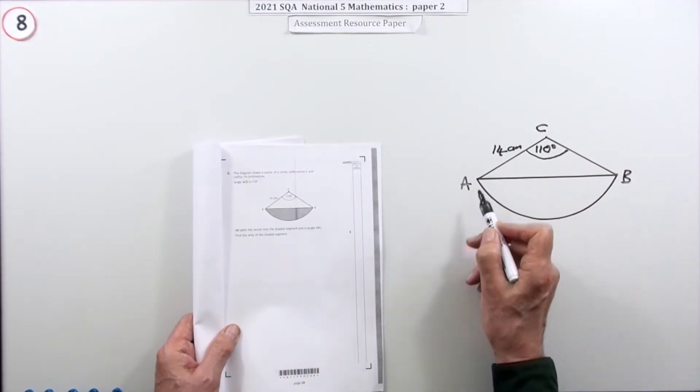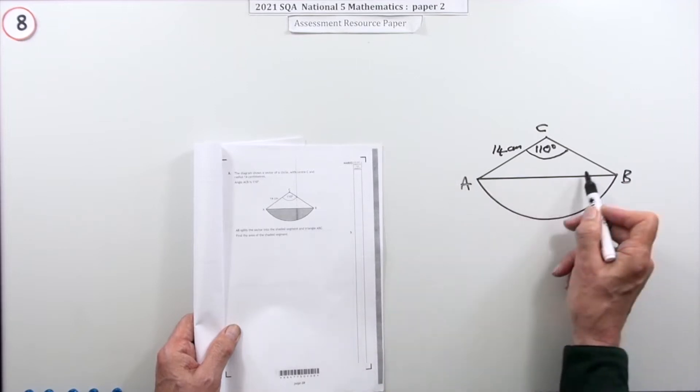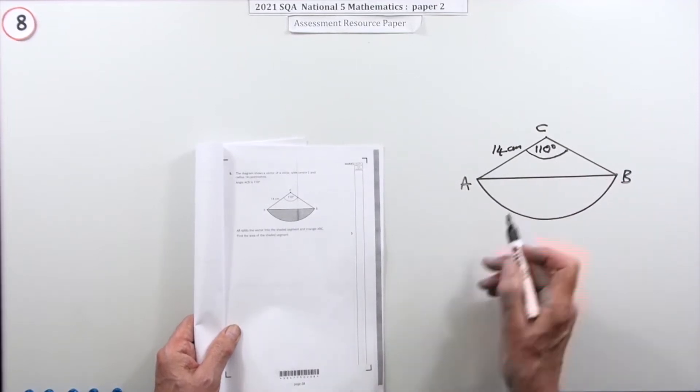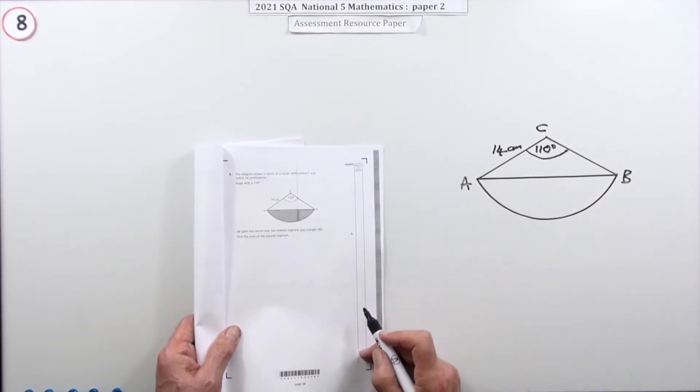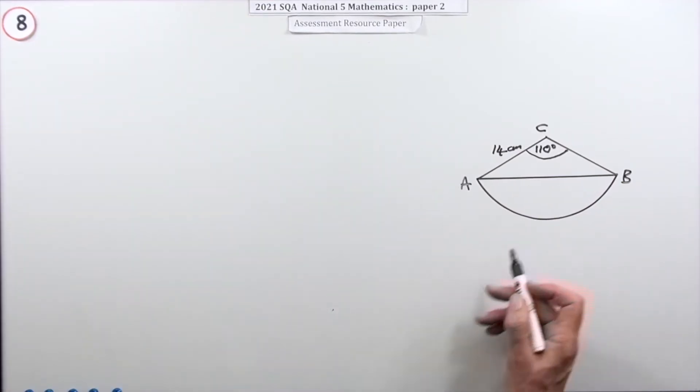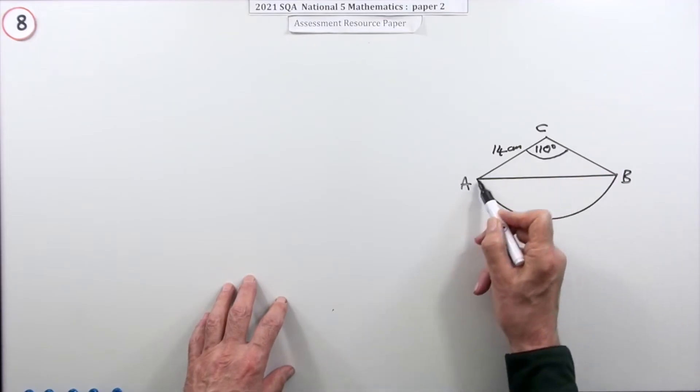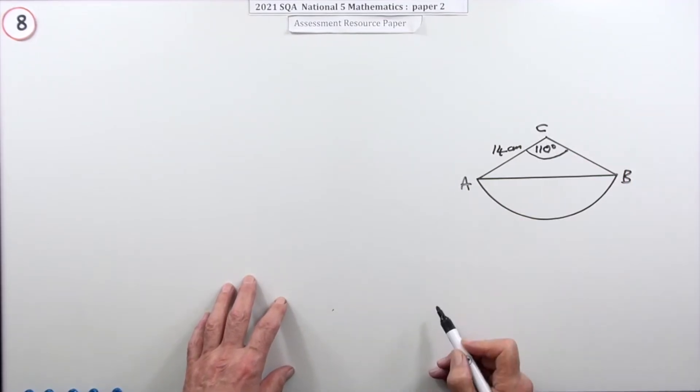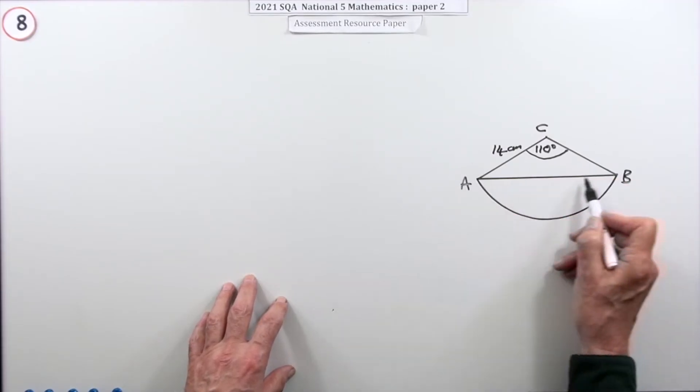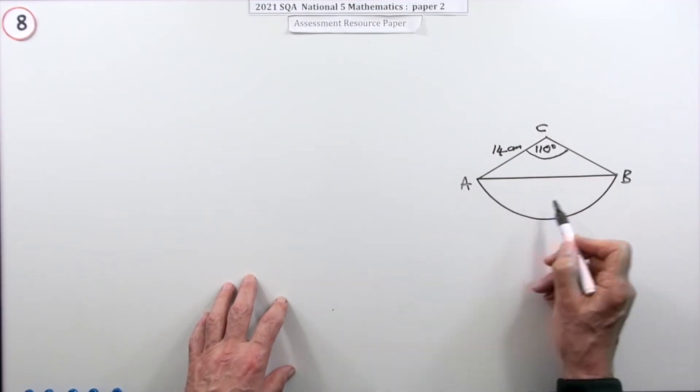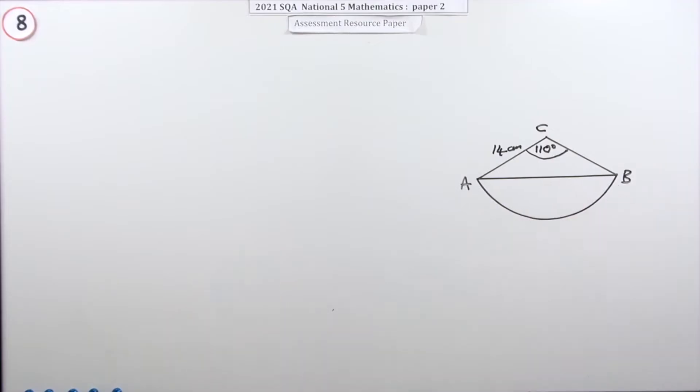It tells you this is a sector, this shaded portion is a segment, and you've got a triangle here. It's been split into those parts, telling you how to find this. The way you find it is get the big area which is the sector, get the area of the triangle, take it away, and be left with the segment.